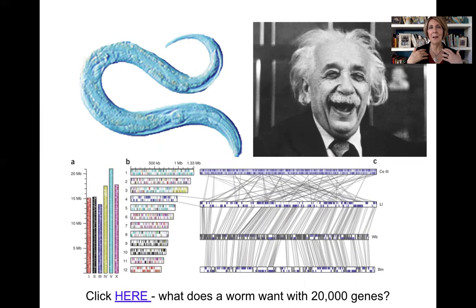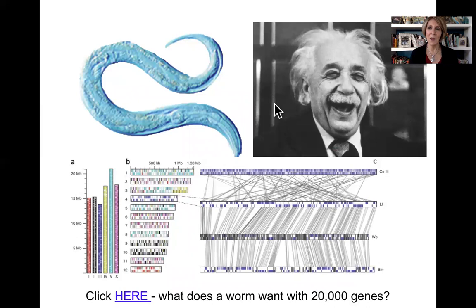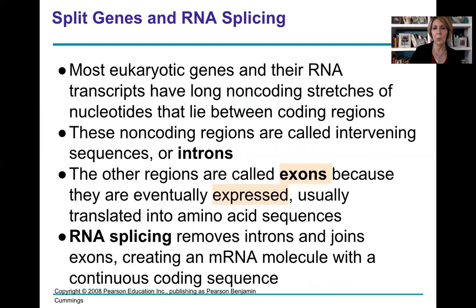Now we come to the really interesting part. This nematode worm has about 20,000 genes — and so does Albert Einstein. When we started the genome project in the 2000s, we thought humans had 200,000 genes, then 100,000, then 50,000, until it came down to just 20,000. How can something as complicated as a human have the same number of genes as a nematode worm?